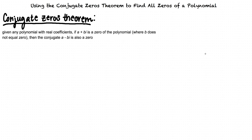What is the conjugate zeros theorem? The conjugate zeros theorem is a property that states: given any polynomial with real coefficients, if a plus bi is a zero of the polynomial, where b does not equal zero, then the conjugate a minus bi is also a zero.